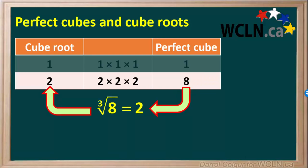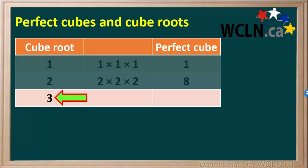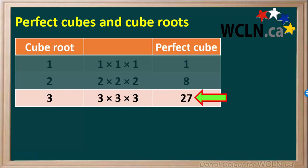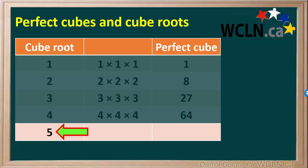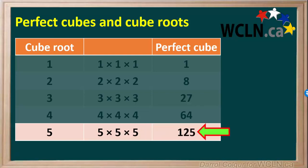The cube root of the perfect cube 8 is equal to 2. The next integer cube root is 3: 3 cubed equals 3 times 3 times 3, which is 27. So 27 is a perfect cube whose cube root is the integer 3. For the integer 4: 4 cubed is 4 times 4 times 4, which is 16 times 4, or 64. The next integer cube root is 5: 5 cubed equals 5 times 5 times 5, which is 25 times 5, or 125. So the integer 5 cubed is 125, and the cube root of the perfect cube 125 is equal to the integer 5.